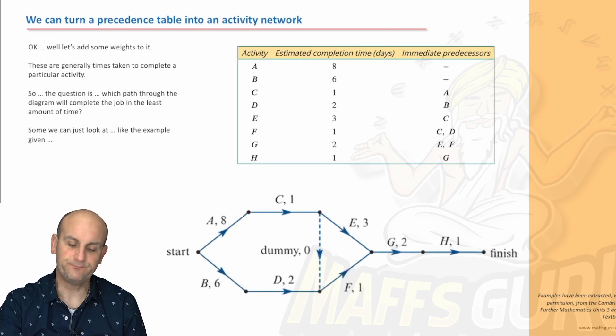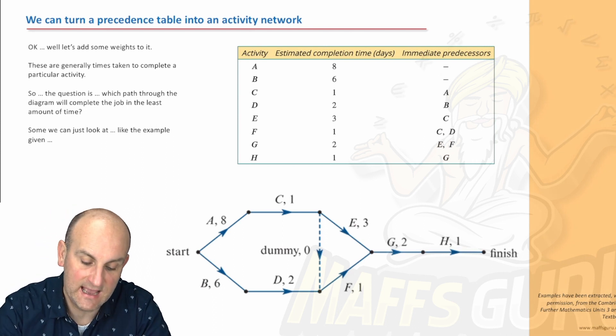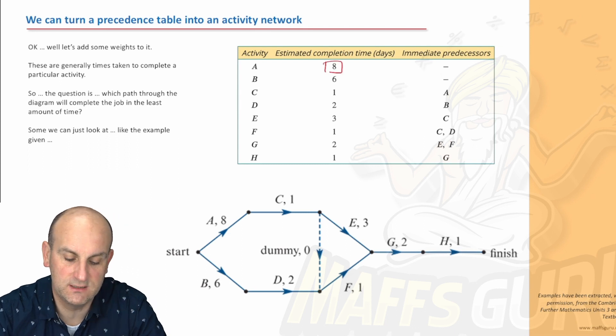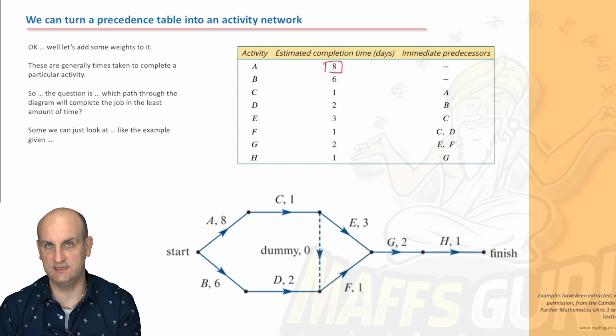So, let's actually now add some weights. And I don't mean dumbbells. I'm talking about how long each of these activities take to do. Here's an example of an activity network and a precedence table with weights on it. Because now what we can tell is that activity A has an estimated completion time of eight days. This is not making a cup of tea, by the way. This might be building a house. Probably not building a house. What could take eight days? No idea.